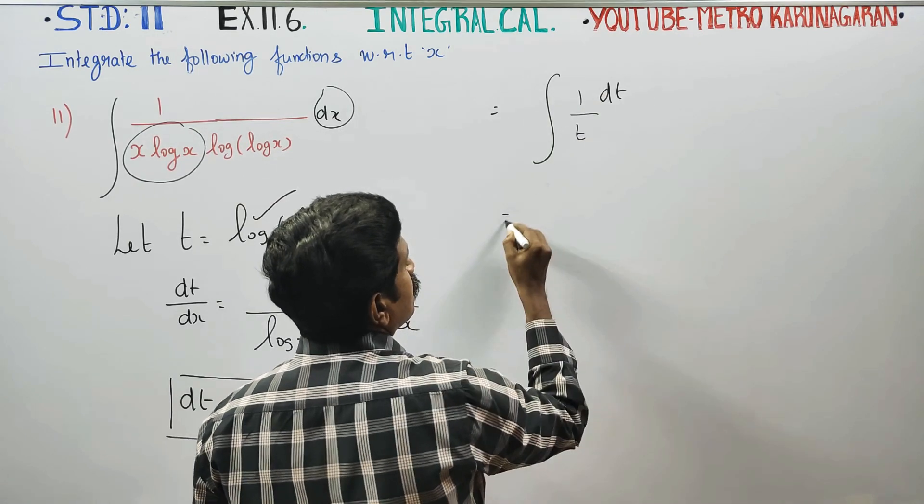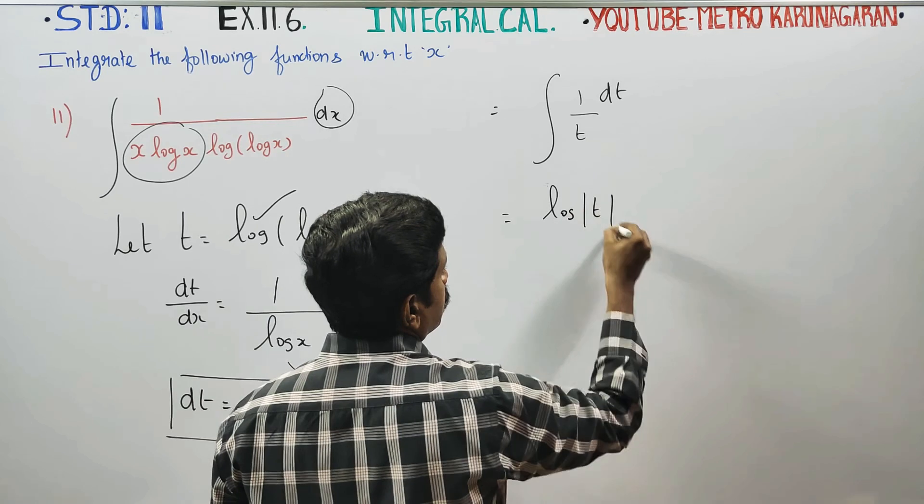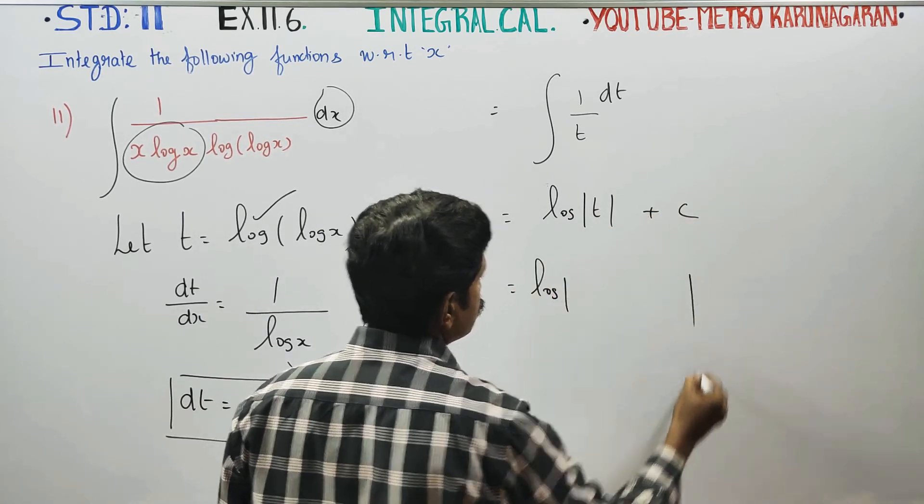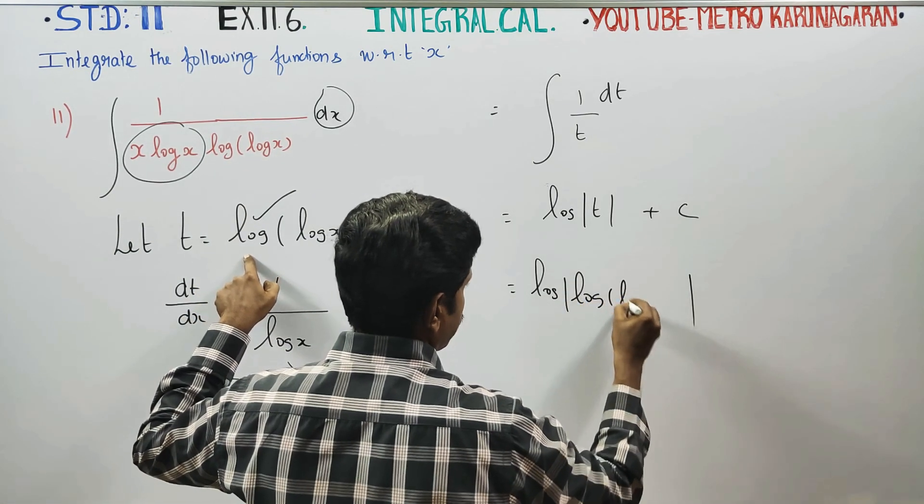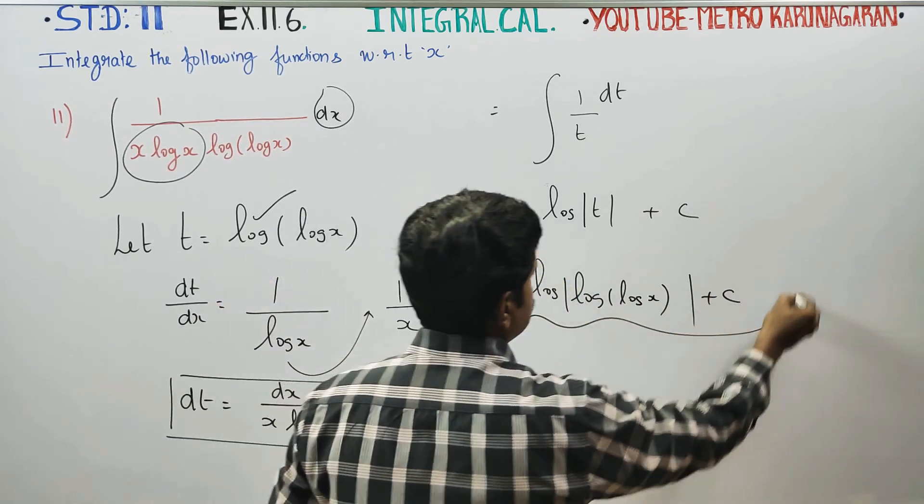What is the integration of 1 by t? Log t plus c. This is equal to logarithm of t in the original version, which is logarithm of log x plus c. This is your final answer.